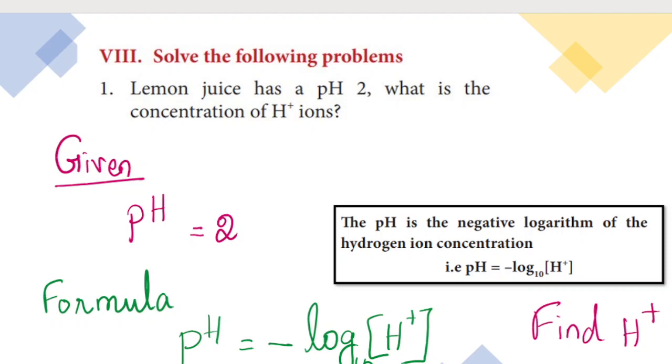So, first problem, solve problem number 1. pH is equal to 2, this is given. That is, the concentration of H plus ions. That is, H plus is mentioned. Now, the formula is connected to this two.